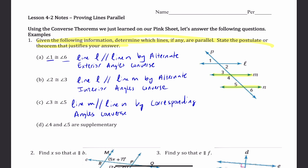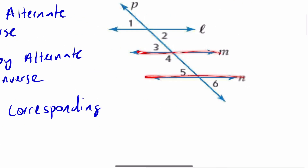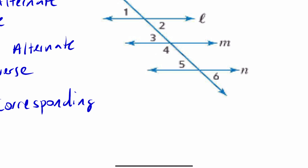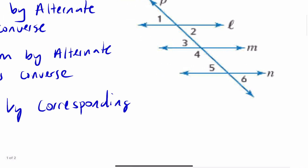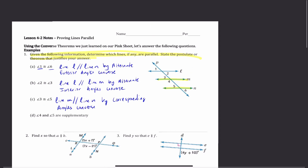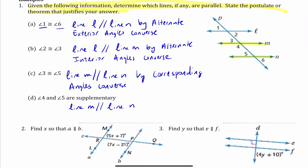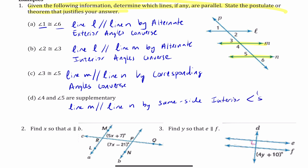1D: angle 4 and angle 5 are supplementary. Here's angle 4 and here's angle 5. These angles are on the inside and on the same side of the transversal. Angle 4 is part of line M and angle 5 is part of line N. So line M and line N are parallel by the Same Side Interior Angles Converse. The converse theorems help us prove lines parallel — that's the gist of this lesson.